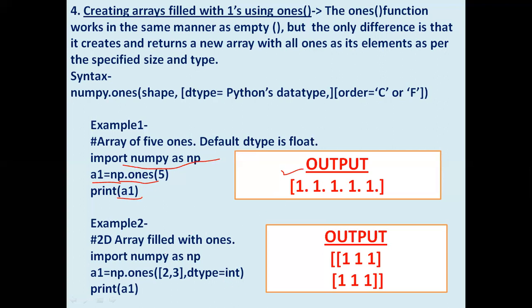For a 2D array filled with ones, we import NumPy library and use np.ones with shape two rows and three columns and data type int. This gives a 2D array with 2 into 3 equals 6 elements, all integer ones without decimal points — two rows and three columns.